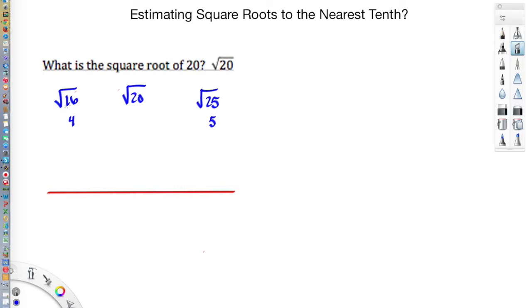Well, I need to figure out 20 is how far along between 16 and 25. Let's make a number line here. If this is 16, then I'd have 17, 18, 19, 20. Then I'd have 21, 22, 23, 24, and 25 over here.